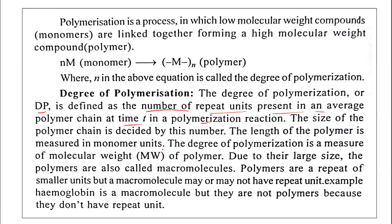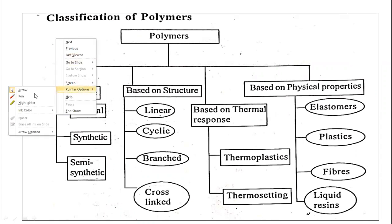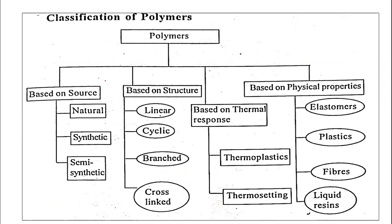Polymers are repeats of smaller units, and we can say that polymers are macromolecules. However, in a macromolecule, there may or may not be a repeat unit. For example, hemoglobin is a macromolecule but it is not a polymer. Polymer molecules, on the other hand, have a defined number of repeat units.